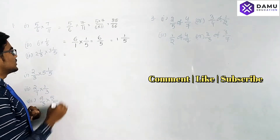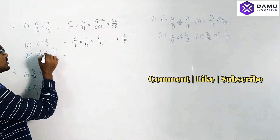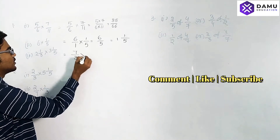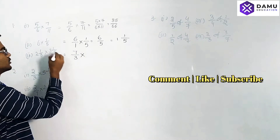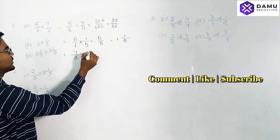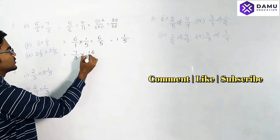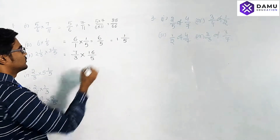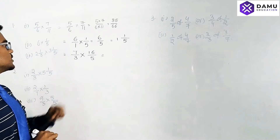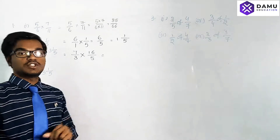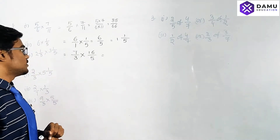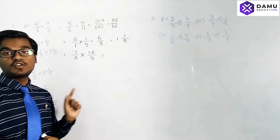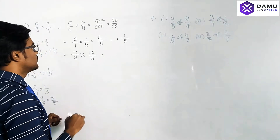Next: 1 and 2/3 — this is nothing but (3×2+1)/3 = 7/3. And 3 and 1/5 — this is (5×3+1)/5 = 16/5. Then we multiply 7/3 into 16/5. Is there any simplification possible here with any values? No, there is no possibility to simplify.